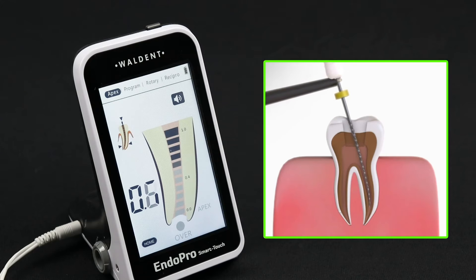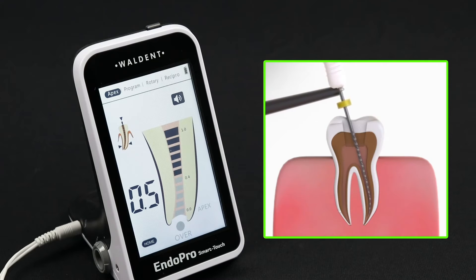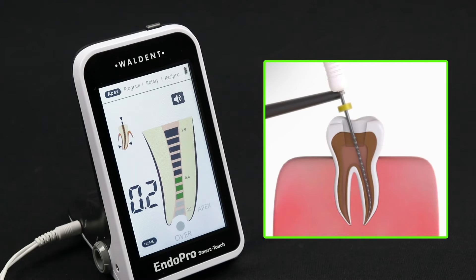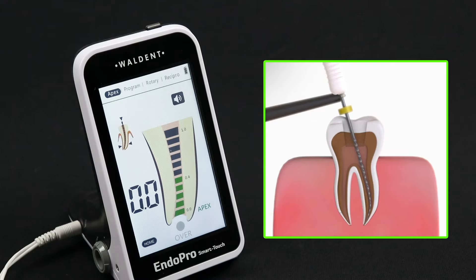When the file is far away from the apical foramen, the blue indication bars are displayed. When the file is nearby the apical foramen, green bars are displayed. When the file extrudes the apical foramen, red bars are displayed.